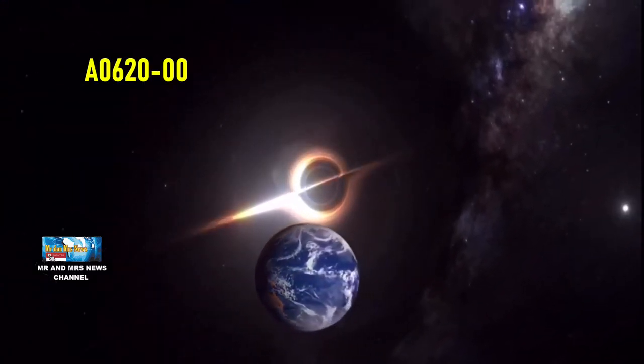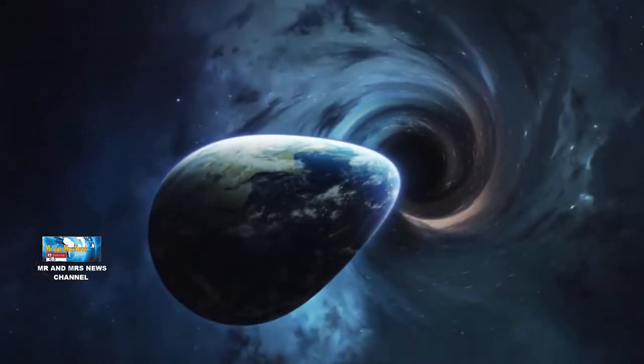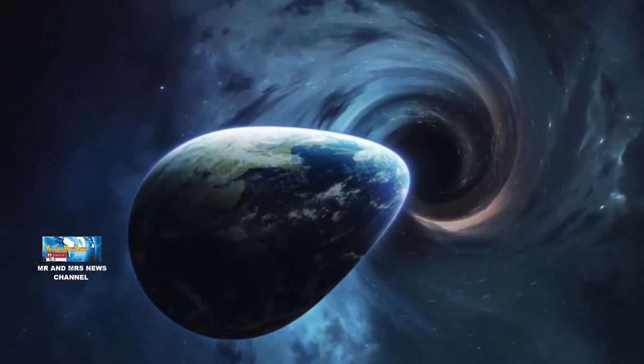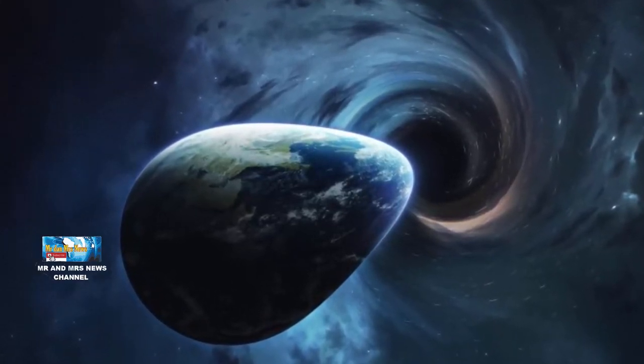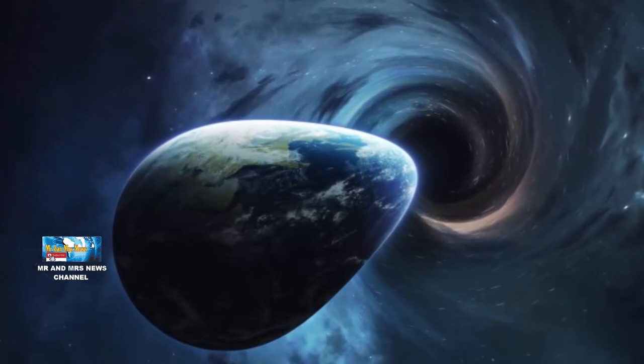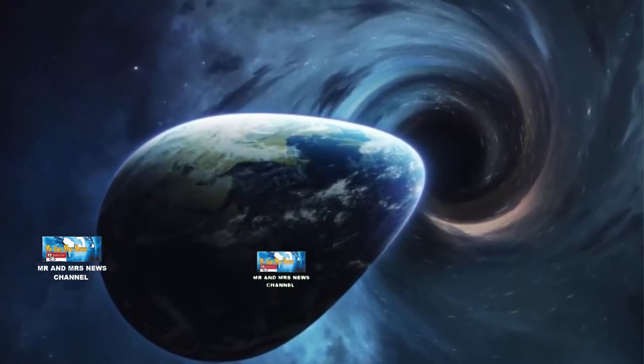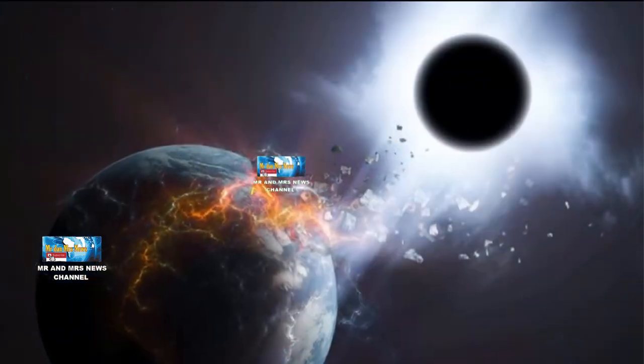Sistem binar terletak sekitar 3.000 tahun cahaya dari bumi. Para astronom meyakini sebuah bintang yang kesepian dalam sistem itu mengorbit lubang hitam supermasif yang memancarkan sejumlah besar radiasi X-ray, tetapi tidak dapat dilihat sebaliknya.